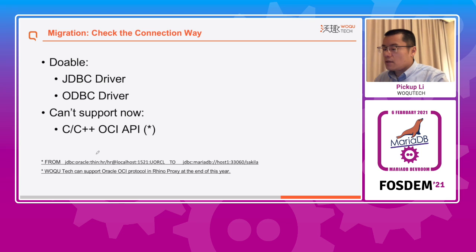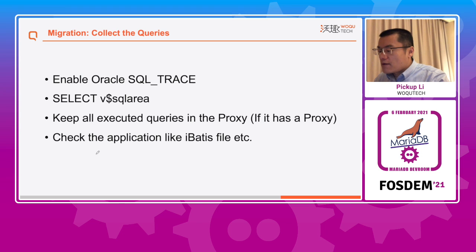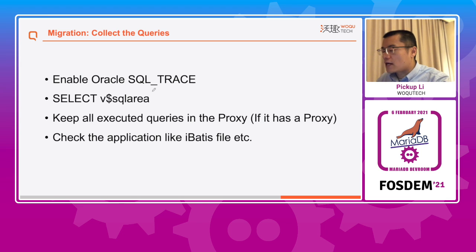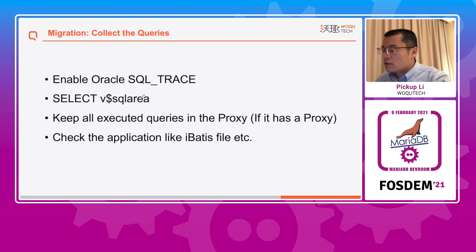The second question: can MariaDB's Oracle-compatible mode be 100% compatible with Oracle? After a simple test, it can be found that MariaDB is currently not 100% compatible with Oracle — such as the TO_NUMBER and TO_CHAR functions, etc. The question now changes to: which Oracle features are used in the application, and which Oracle features do we need to modify MariaDB to support? We need to know all the SQL queries executed by the application. We can enable Oracle trace and collect SQL query info to get all queries on the Oracle database, and obtain the table structure, stored procedures, etc. to get the metadata.